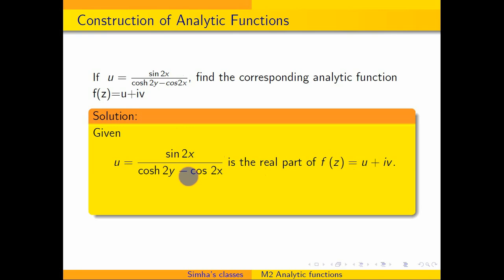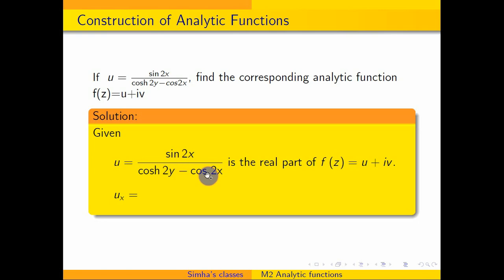Then, replacing x by z and y by 0 and applying the formula. The expression is of the form u divided by v — numerator and denominator. So we apply the quotient rule formula: v·u′ minus u·v′ divided by v squared.